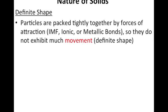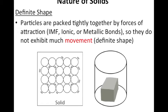Solids in general also have a definite shape. Particles are packed tightly together by forces of attraction — whether intermolecular forces in a covalent bond, the ionic bonds of an ionic compound, or the metallic bonds in a metallic compound. They do not exhibit much movement, which gives them their definite shape. Their arrangement is pretty fixed — they are vibrating, but their shape stays the same.